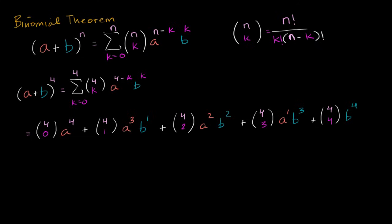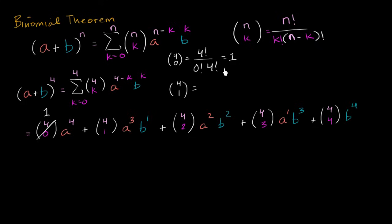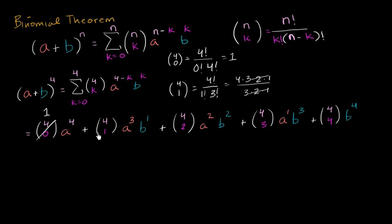Applying the formula: four-choose-0 equals four factorial over zero factorial times four factorial — zero factorial is defined as 1 — so this equals 1. Four-choose-1 equals four factorial over one factorial times three factorial. One factorial is 1, four factorial is 4×3×2×1, three factorial is 3×2×1, which cancels to leave us with 4.